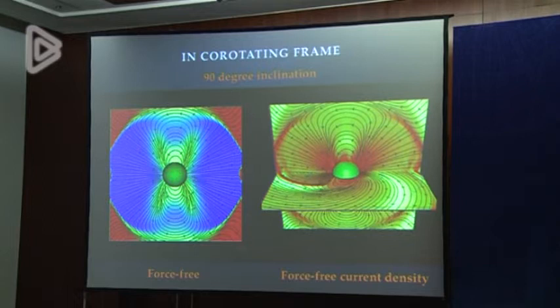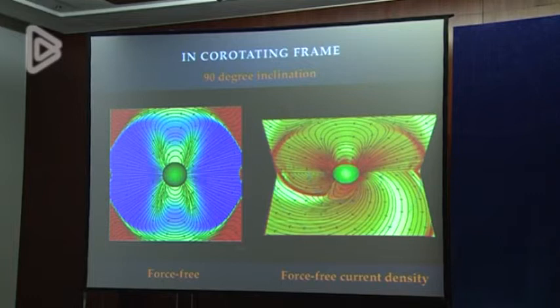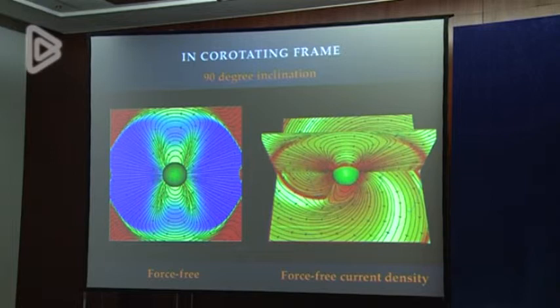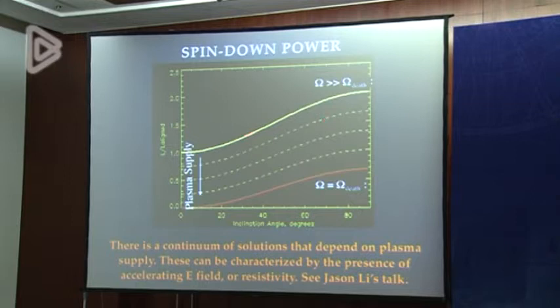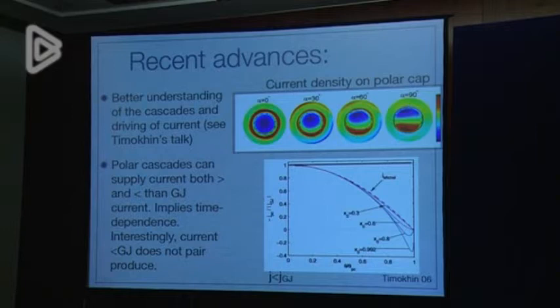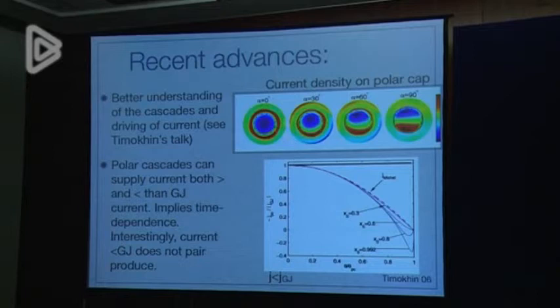These solutions are probably just one part of a continuum of solutions. As a function of plasma supply, spin-down power would go from the force-free limit to the vacuum limit. I encourage you to hear Jason Li's talk later today, describing how this evolution can happen as a function of effective resistivity in the magnetosphere. Recent advances include taking force-free simulations in 3D to understand how the current forms and how the pulsar actually provides the required current — what you find is that in different parts of the polar cap the current can be larger or smaller than the Goldreich-Julian current.